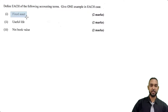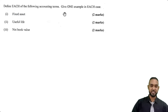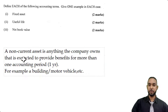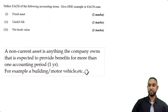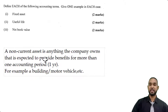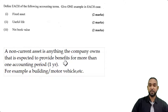The first thing they're asking us to define is fixed asset. We no longer call them or refer to them as fixed assets — we refer to them as non-current assets. A non-current asset is any asset that the company owns that is expected to provide benefits for more than one accounting period. For example, a building, a motor vehicle, etc. The major point is that it's an asset that is long-lasting and expected to provide benefits for more than one year.